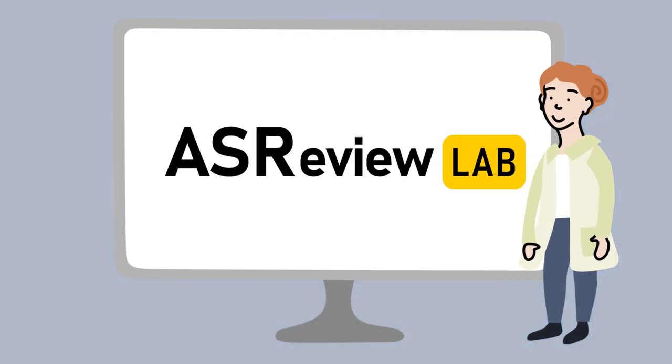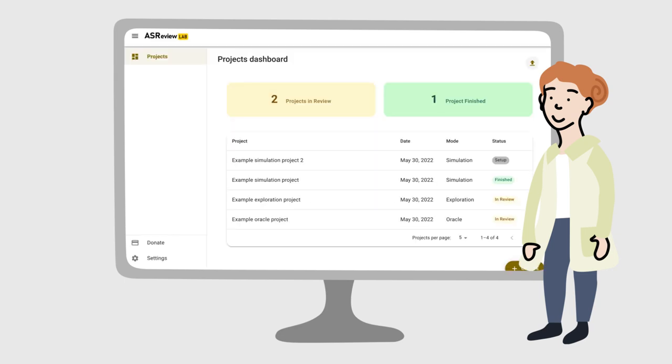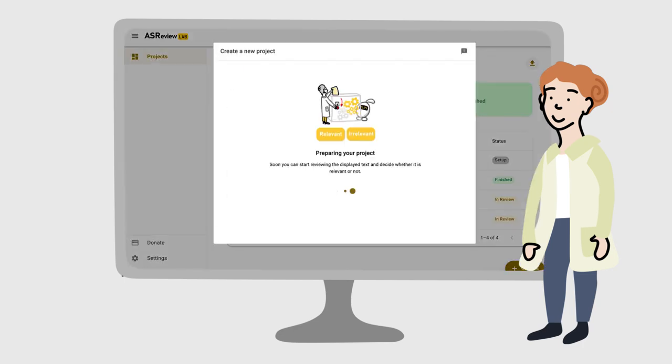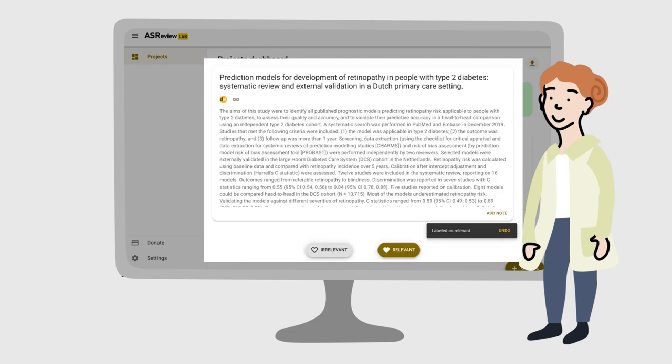AS Review Lab is open source software that makes reviewing much faster, combining the power of machine learning with your expertise, while giving you full control of the actual decisions.